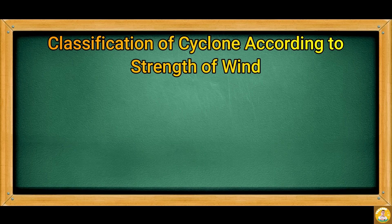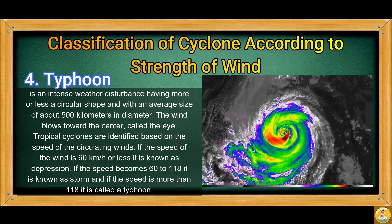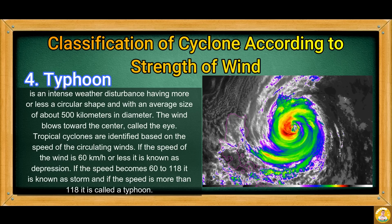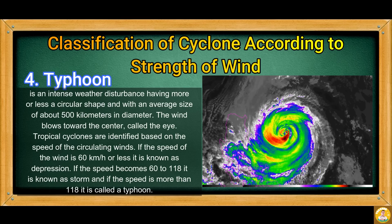The last classification of cyclone is Typhoon. It is an intense weather disturbance with a more or less circular shape and an average size of about 500 km in diameter. The wind blows toward the center, called the eye. Tropical cyclones are identified based on the speed of the circulating winds: 60 km per hour or less is a depression; 60 to 118 km per hour is a storm; and more than 118 km per hour is called a typhoon.